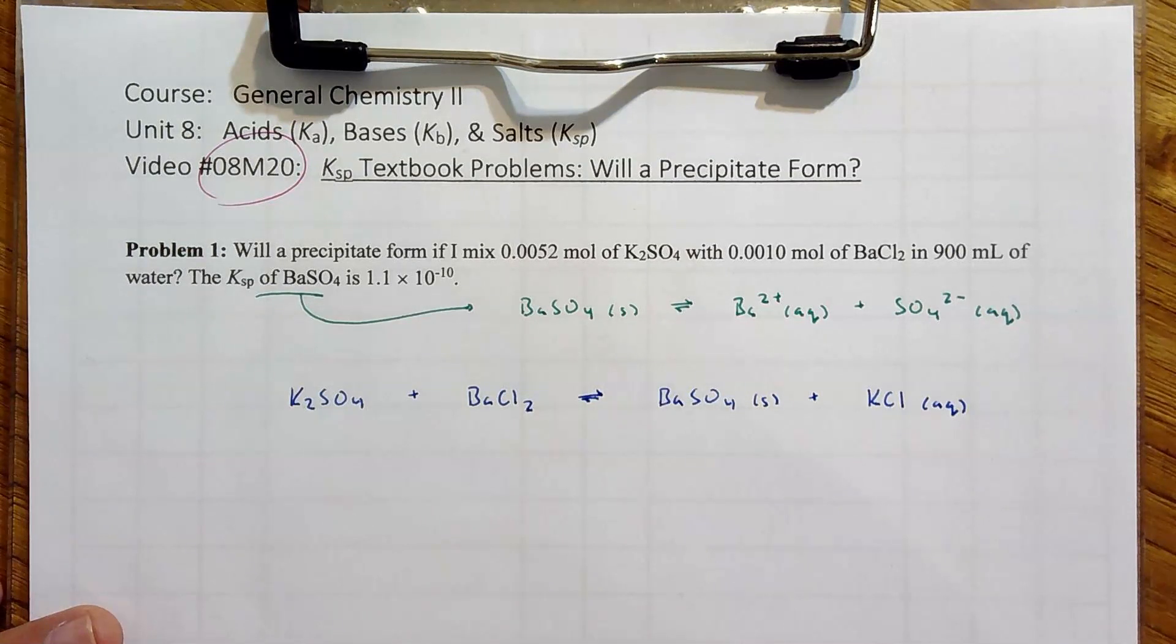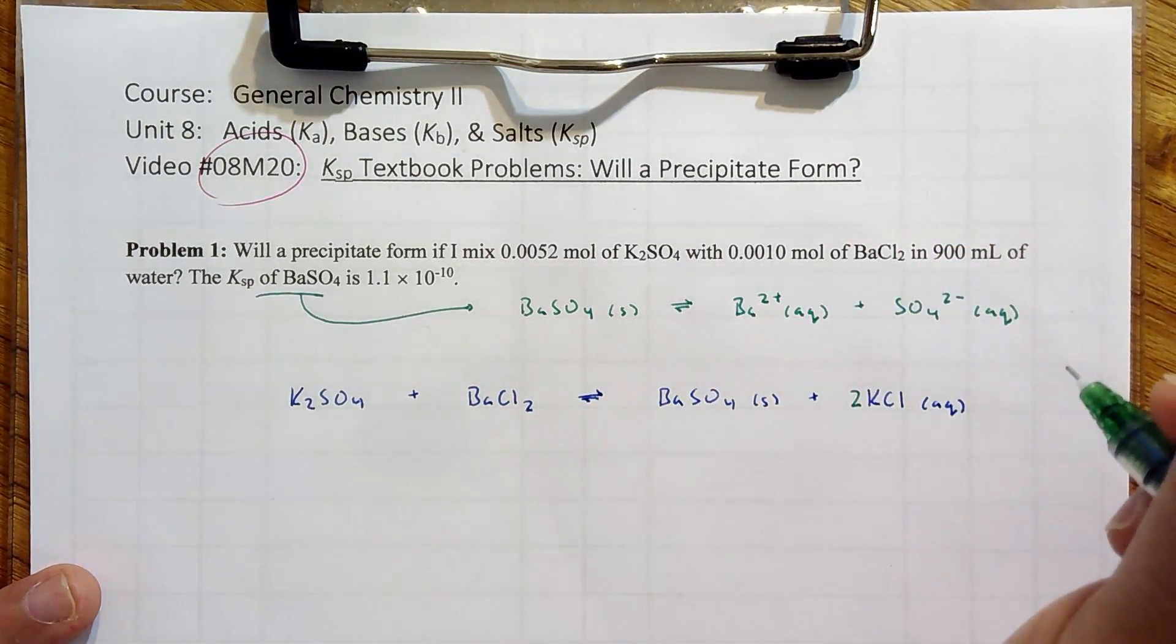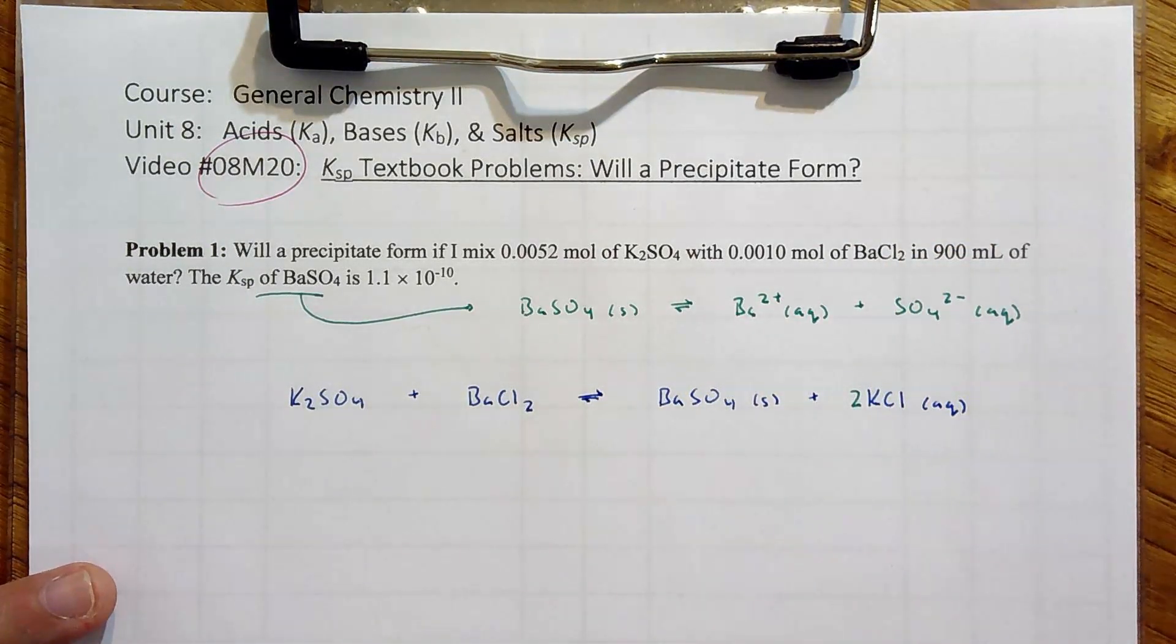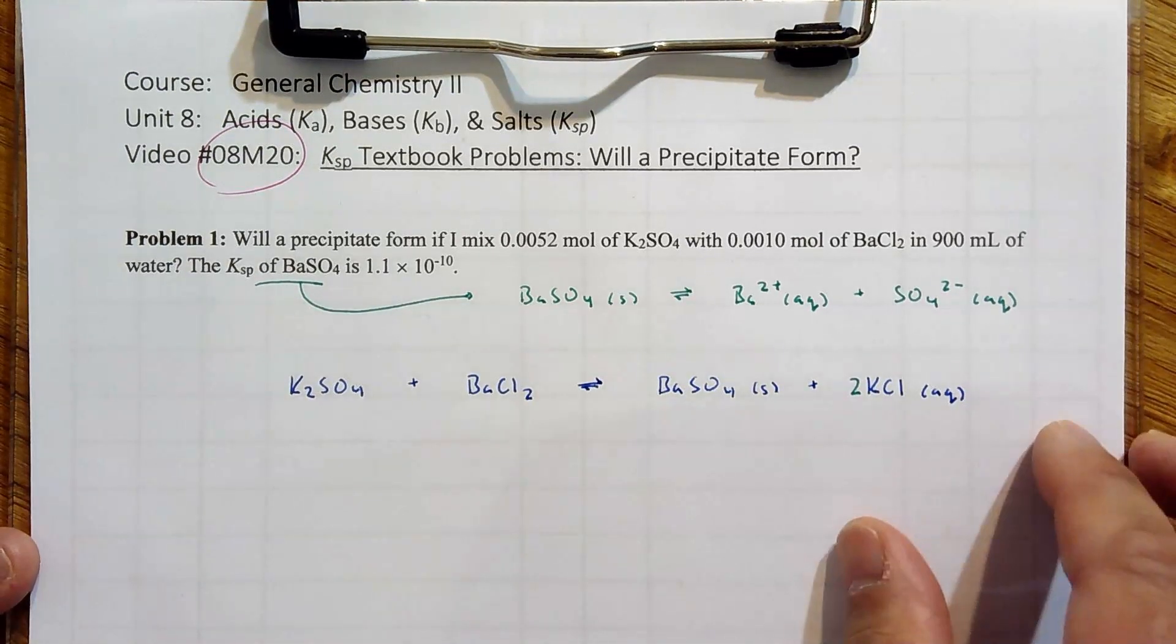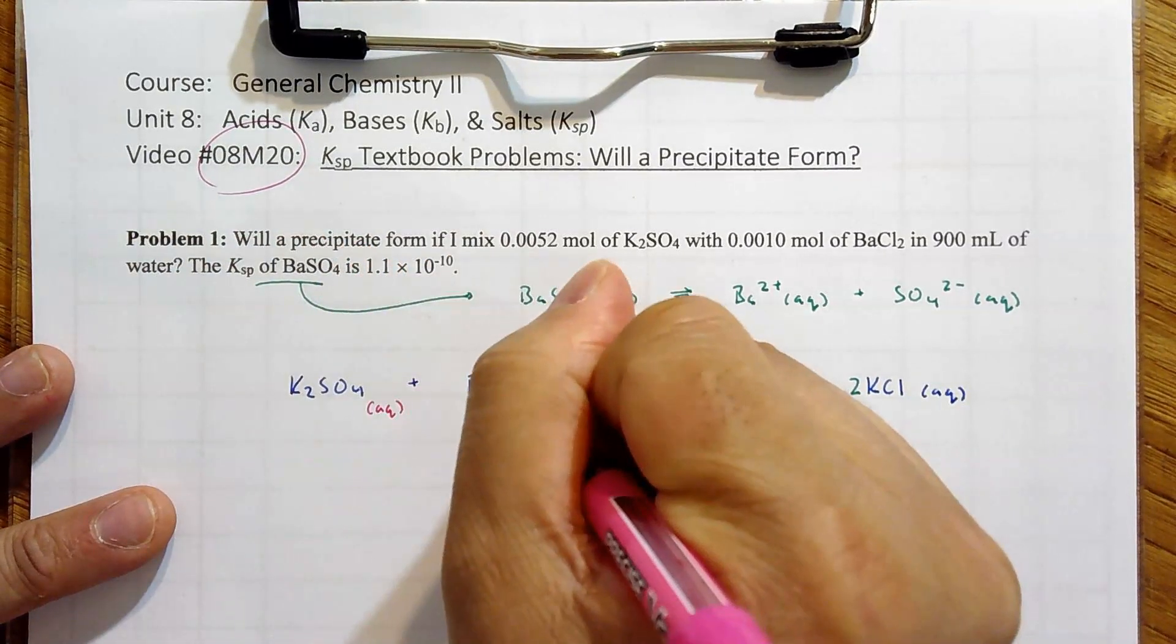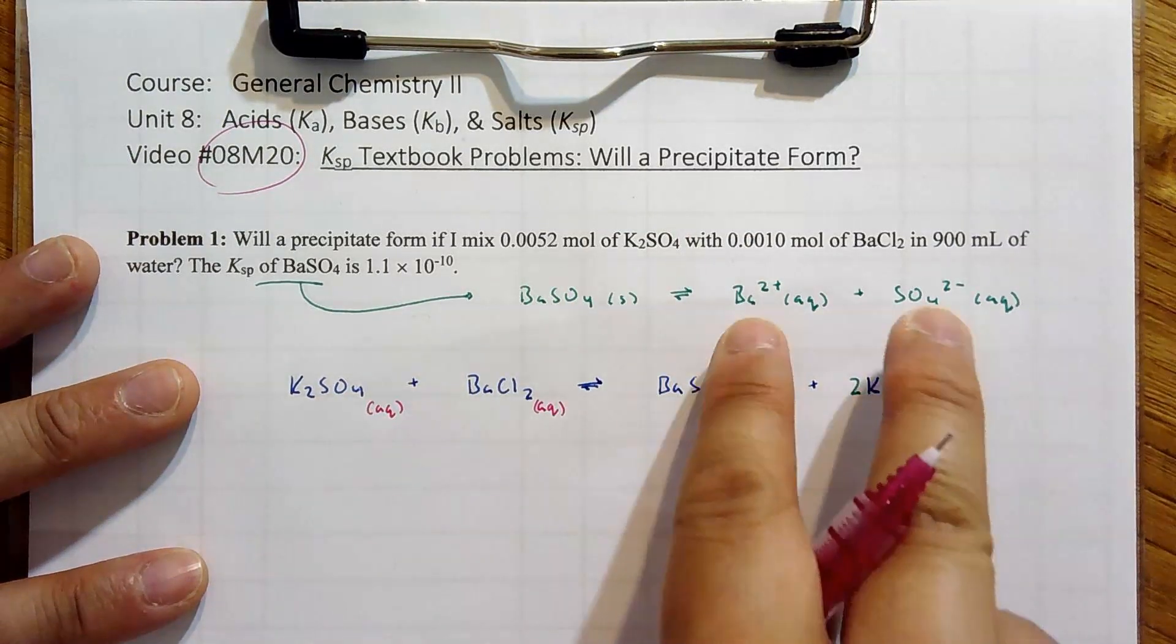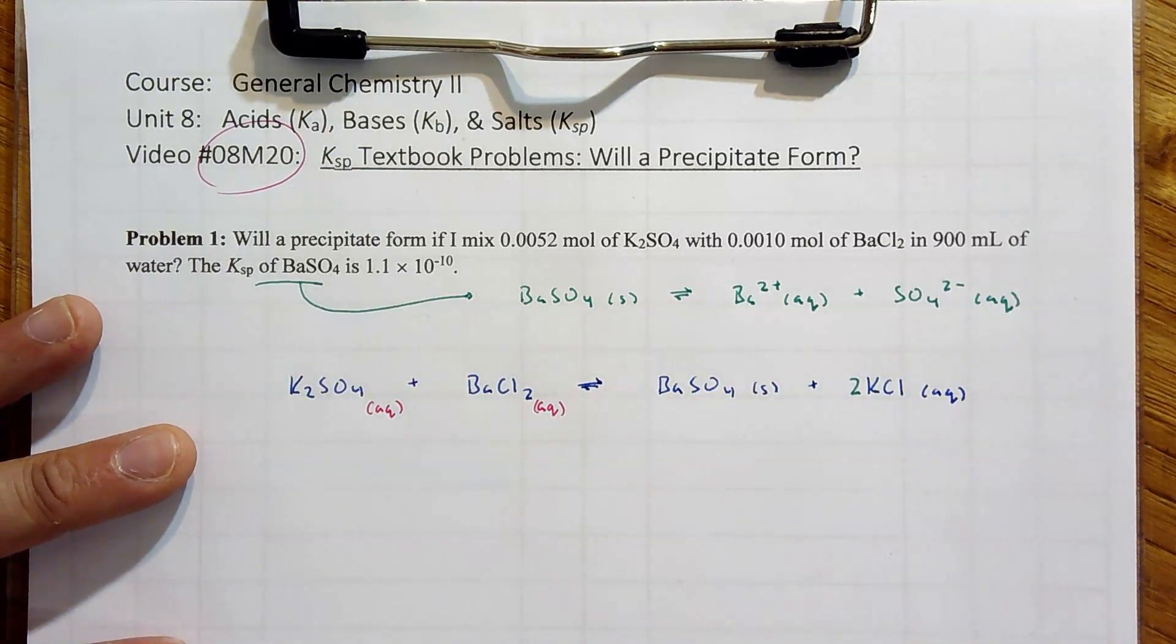Anyway, we've got to balance. Two potassiums, two KCls, and I think we are good. Well, what do we need? We are going to assume that these are both aqueous. And whatever the concentrations are of these two, we can figure out the concentration of these two.